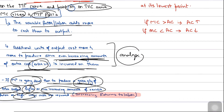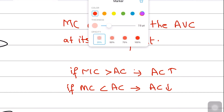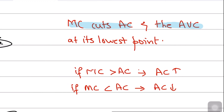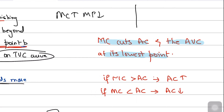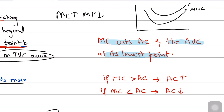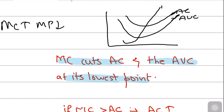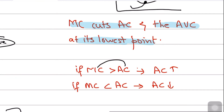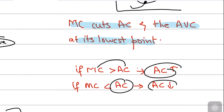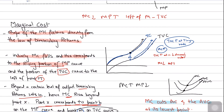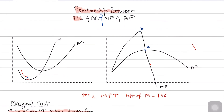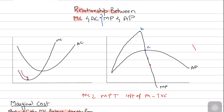The key takeaways: marginal cost cuts average cost and average variable cost at their lowest points. If marginal cost is more than average cost, average cost goes up; if marginal cost is less than average cost, average cost goes down. In the next video we'll be discussing shifts in the short-run cost curves, and then we'll move to the long-run cost curves.